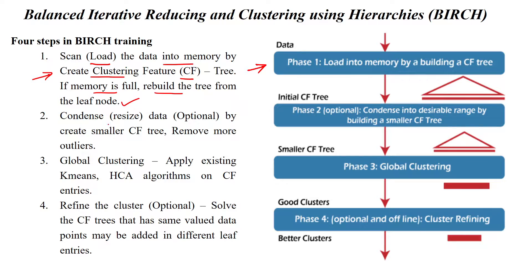The second step is resizing the given dataset by creating a smaller clustering features tree. If we have a large dataset with more data points, then we have to make it into a smaller clustering feature tree. This is an optional step. Here, we can remove the number of outliers from the given dataset when creating more smaller clustering features trees.